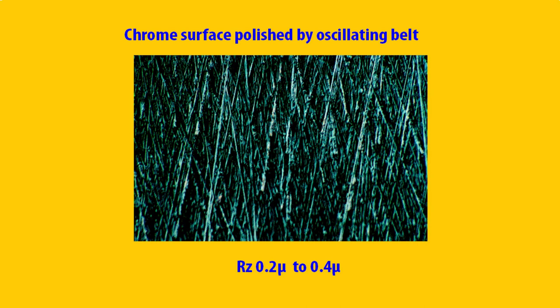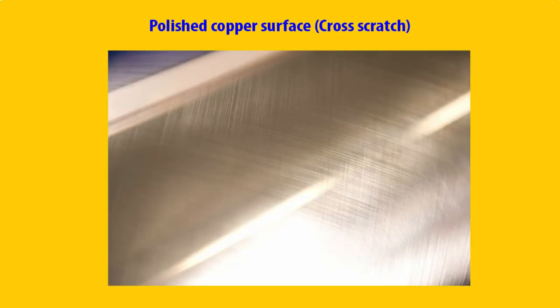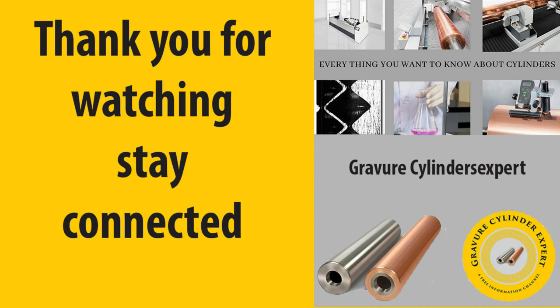In addition to roughness, the polishing angle of the chrome surface is also important. Normally a 60-degree polishing angle works best for most applications. Nowadays cylinder manufacturers put the roughness in the copper surface so that the entire chrome thickness carries this roughness pattern. Cross scratch polishing is a modern and effective way of putting roughness into the copper surface.